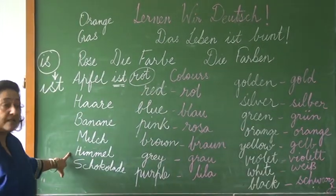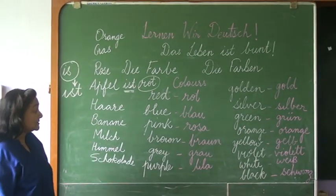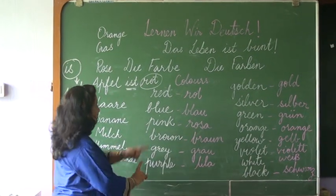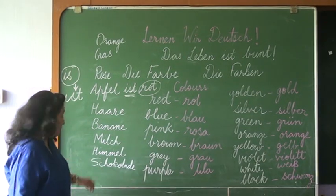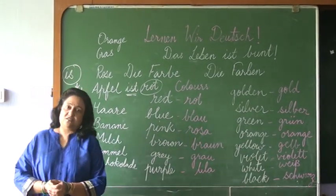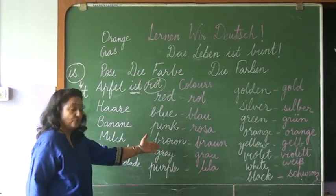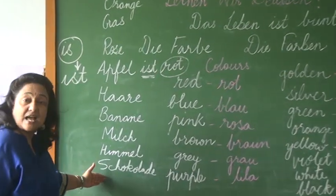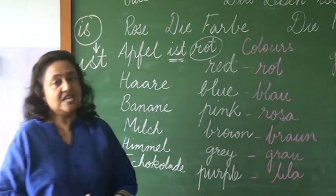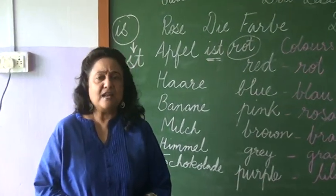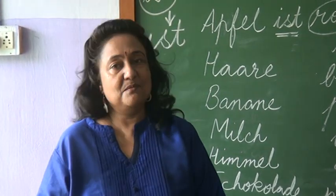Next: Himmel means sky. Sky is blue. So: Himmel ist blau. Chocolate — your favourite — the colour of chocolate is brown. Die Schokolade ist braun. So these were the colours and a few sentences I have taught you all. Please learn and keep them in mind. Thank you.